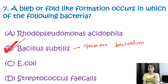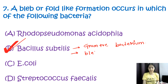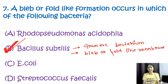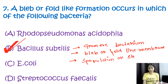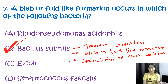Bacillus subtilis can form a bleb or fold-like membrane particularly during sporulation or under stress conditions. These structures are part of the cell adaptation mechanisms and can be involved in processes like secretion or cell division. The correct option is B, Bacillus subtilis.